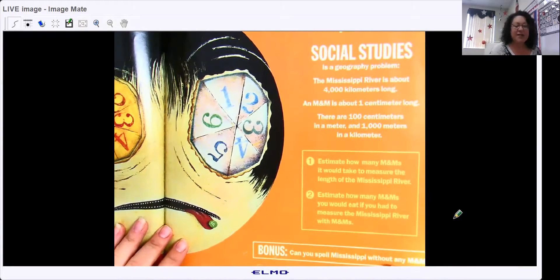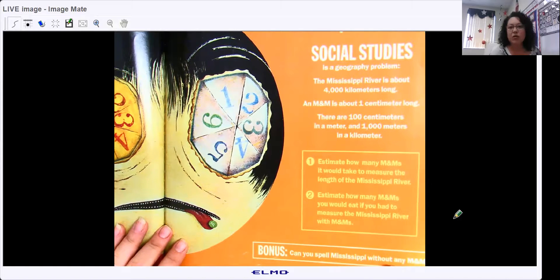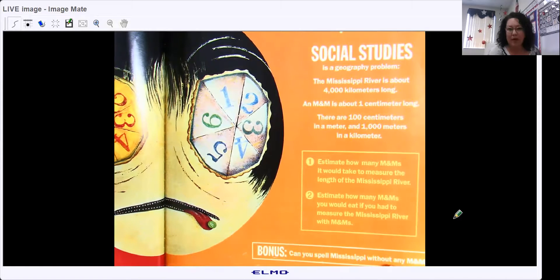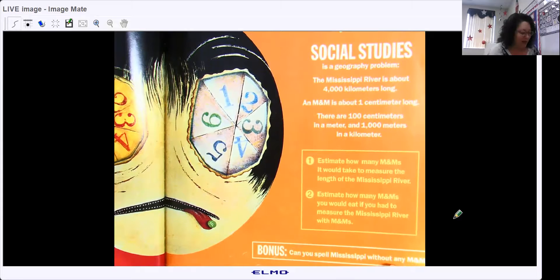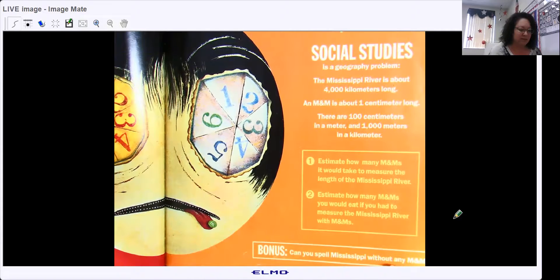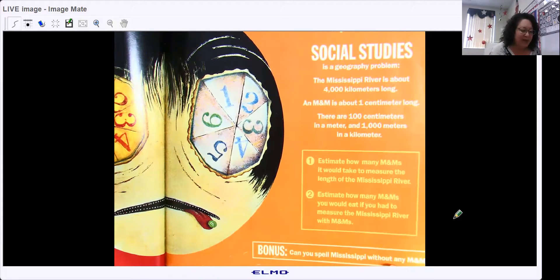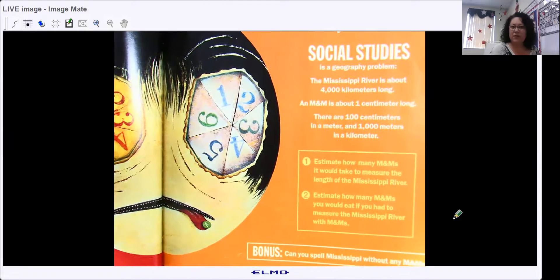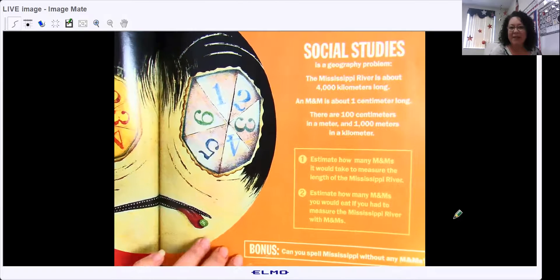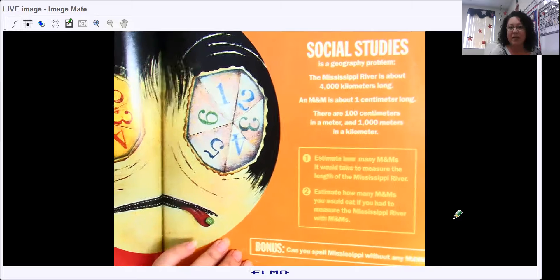In the afternoon, every subject is a problem. Social studies is a geography problem. The Mississippi River is about 4,000 kilometers long. An M&M is about one centimeter long. There are 1,000 centimeters in a meter and 1,000 meters in a kilometer. Estimate how many M&Ms it would take to measure the length of the Mississippi River.